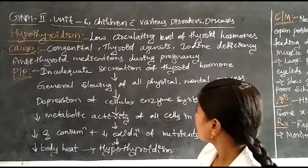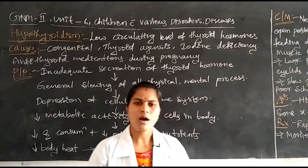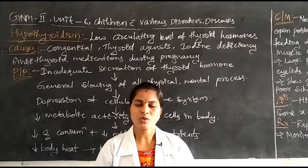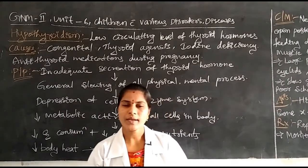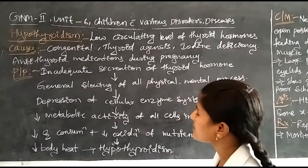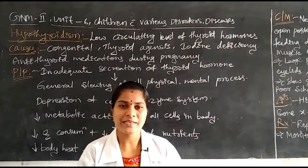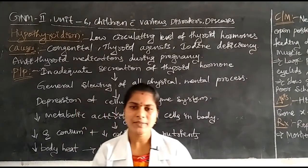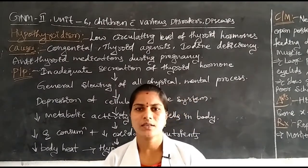Now the pathophysiology of hypothyroidism. First, inadequate secretion of thyroid hormones occurs due to structural abnormalities, functional abnormalities, or medications used by the mother or children. This leads to insufficient secretion of thyroid hormone, which in turn causes physical and mental processes to become very slow. The children are not doing any activities and their thinking capacity or memory is impaired.